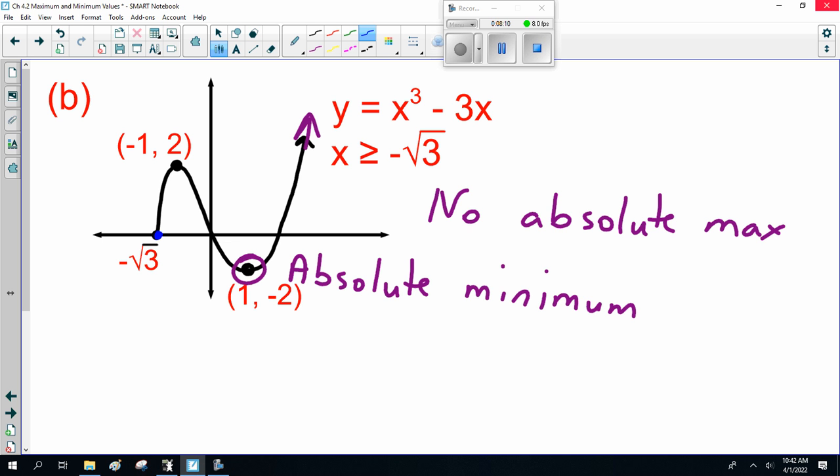Now remember when I said there's a minimum? On either side, there should be a maximum. Well, here at (-1, 2) we have a local max. Now careful, on the right side of it, this goes on forever, so there's no local maximum on the right.